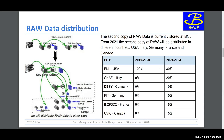The Belle2 distributed computing model is geographically distributed, using the grid, and aims at accomplishing several tasks including raw data processing and reprocessing, Monte Carlo production, physical analysis, and data storage and archiving. There will be a significant increase in luminosity over the next years, translating to storage: between 2021 and 2024, we are almost multiplying by four the amount of disk storage.